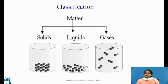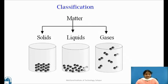All the objects and substances that we see in the world are made of matter. Matter is classified into three states: solid, liquid, and gases.